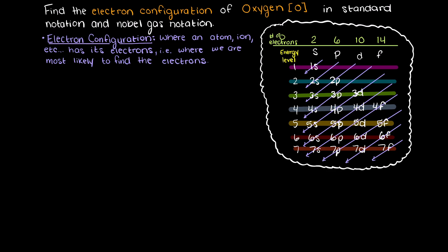When finding the electron configuration of an atom, we are being asked where does this atom place its electrons? In other words, which shells and orbitals are its electrons most likely to be found?